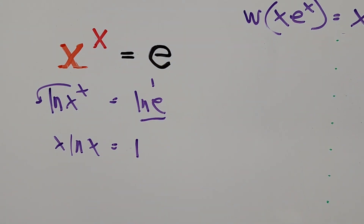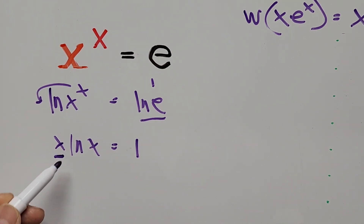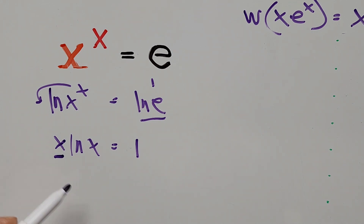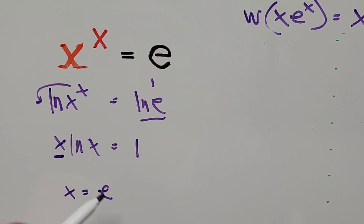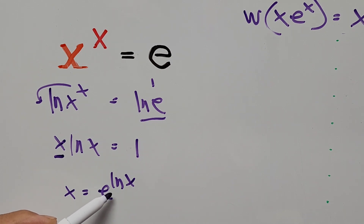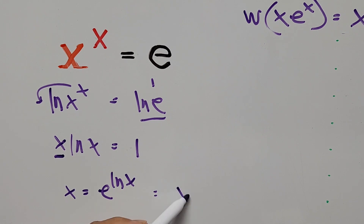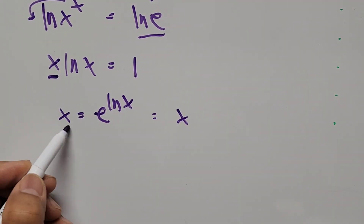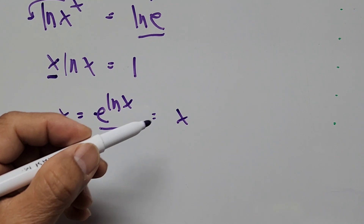Now if you notice, on the left-hand side we have ln of x with x as a coefficient. We can express x in terms of e to an exponent. Specifically, x can be represented by e to the power of ln of x, since e to the power of ln of x equals x. So the value of x here is e to the ln of x.